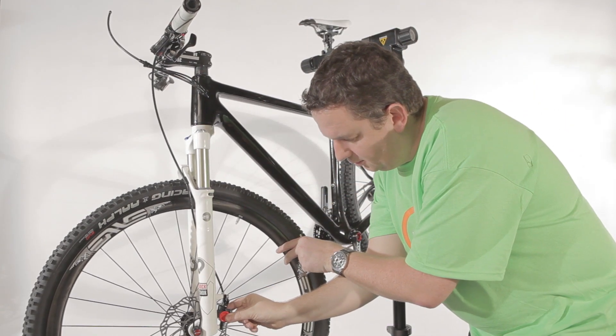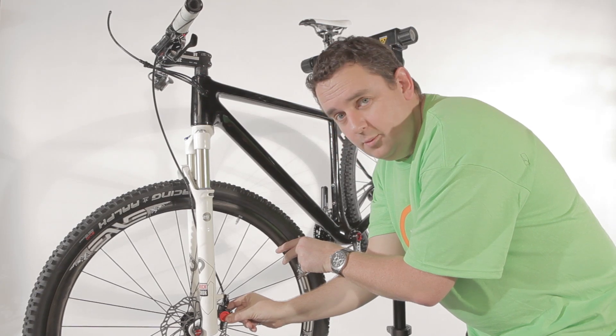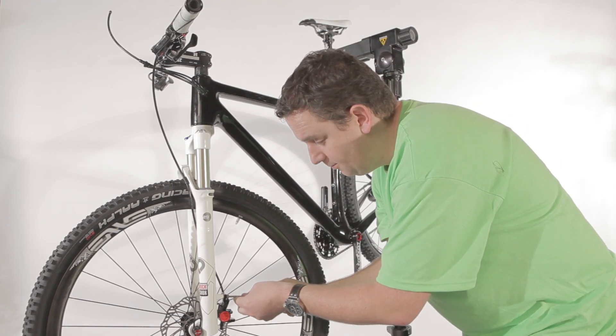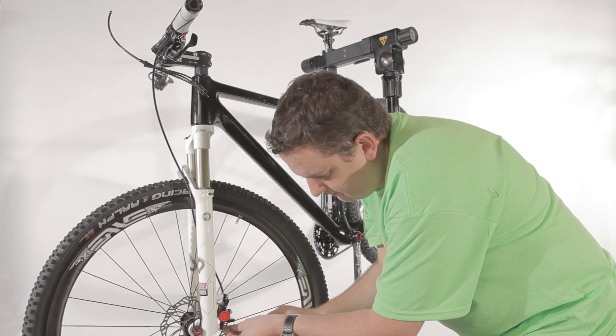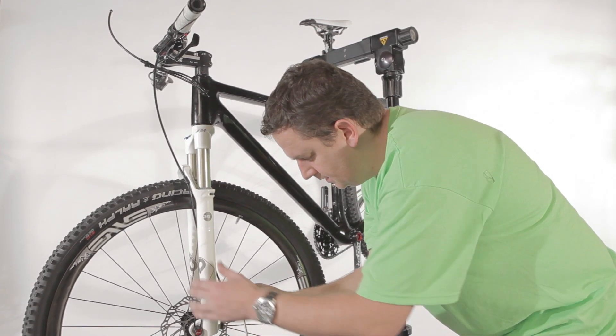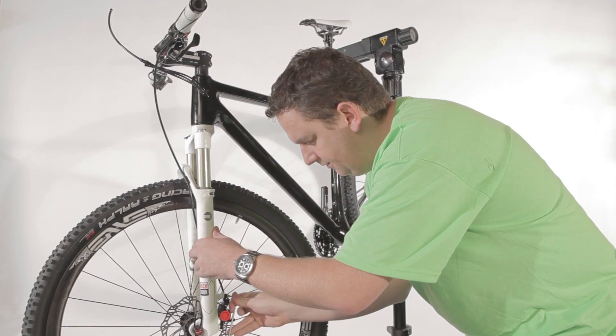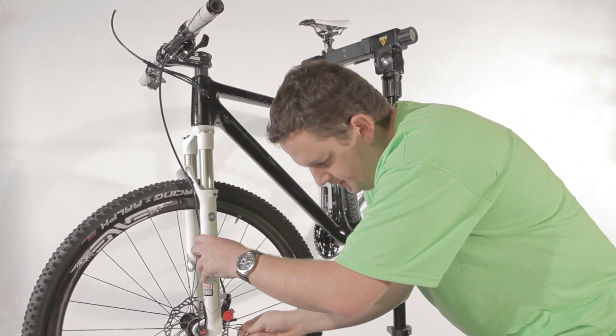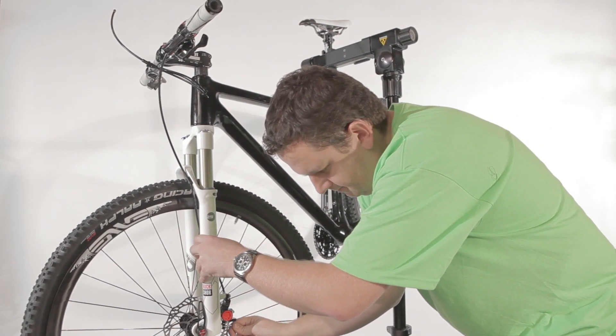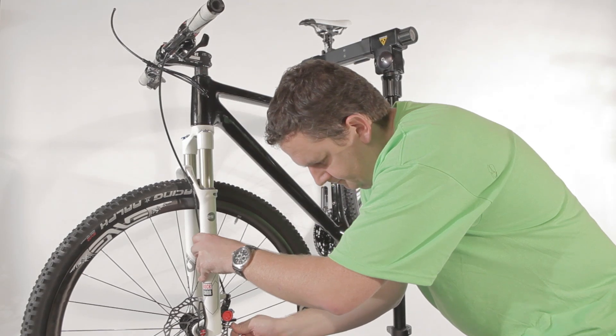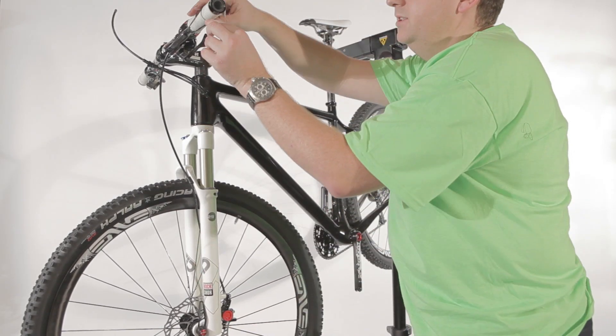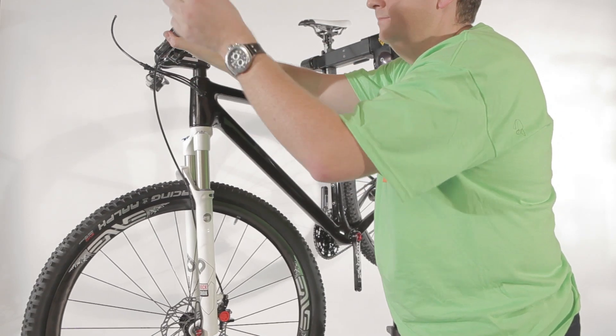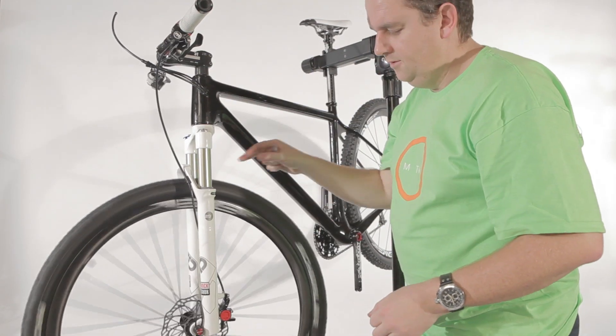Now the caliper is firmly in line with the rotor. So basically next step we're going to do is tighten up the bolts. Make sure that they're properly fixed. Then we release the rubber band again. And the rotor spins freely.